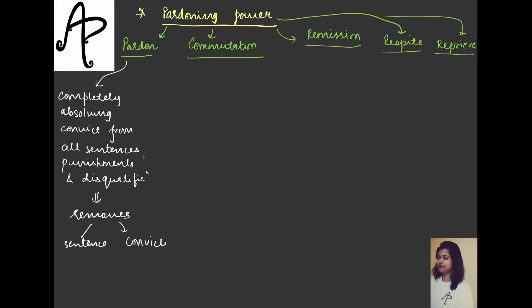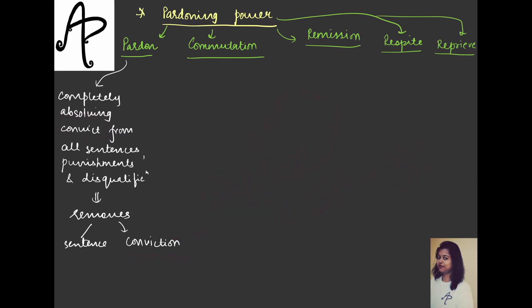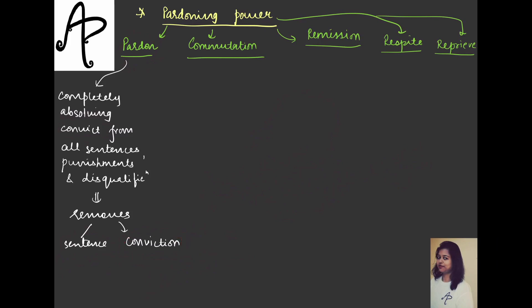So when pardoning happens, it removes both the sentence and the conviction. What is conviction? Conviction means there is a formal declaration that the person is guilty of any kind of criminal offense. If pardoning is done — if the President or Governor pardons that particular convict — then the charges and punishment will go, and even the formal declaration of guilt is removed. That is pardoning completely.